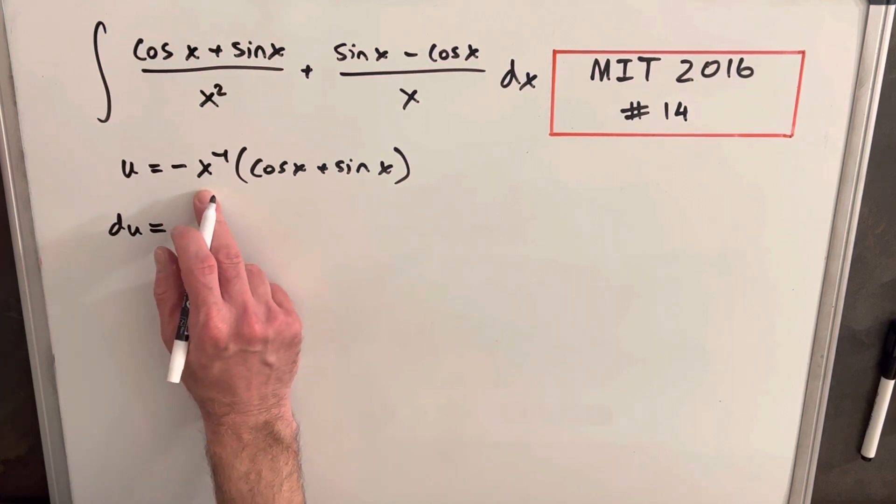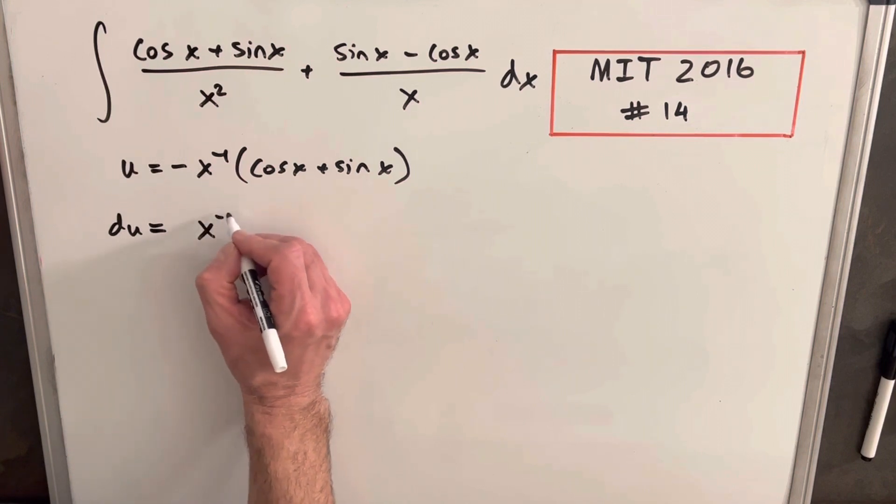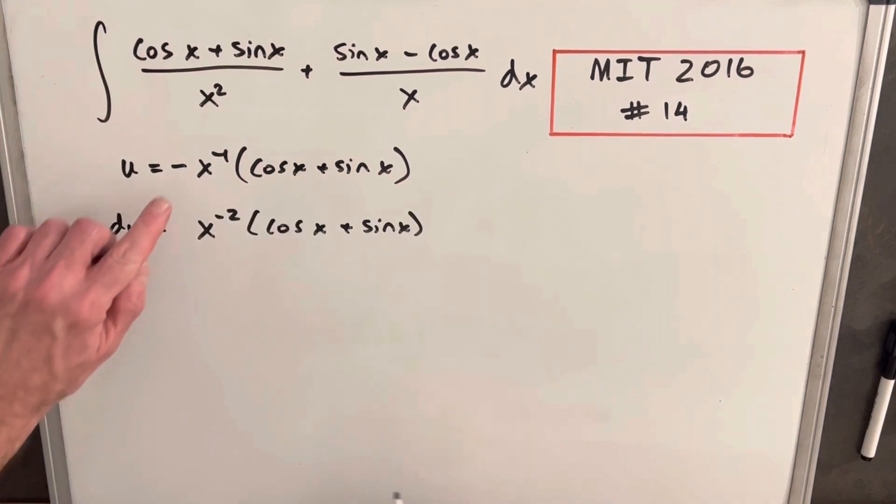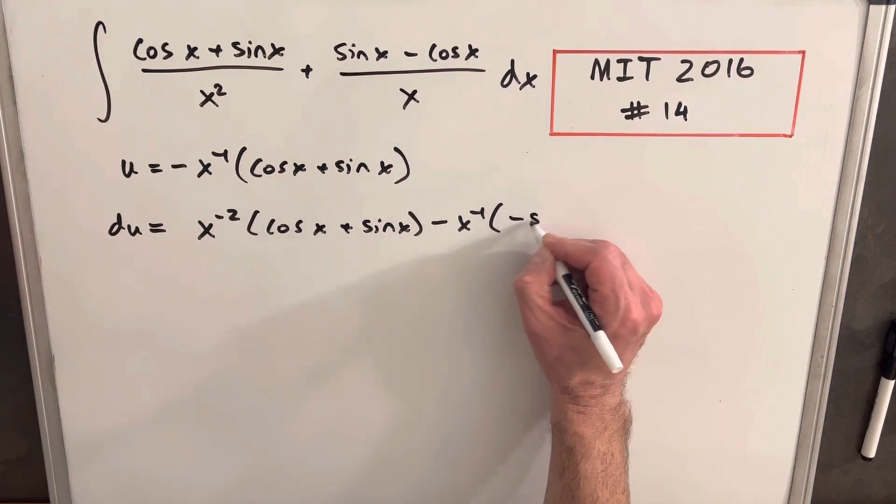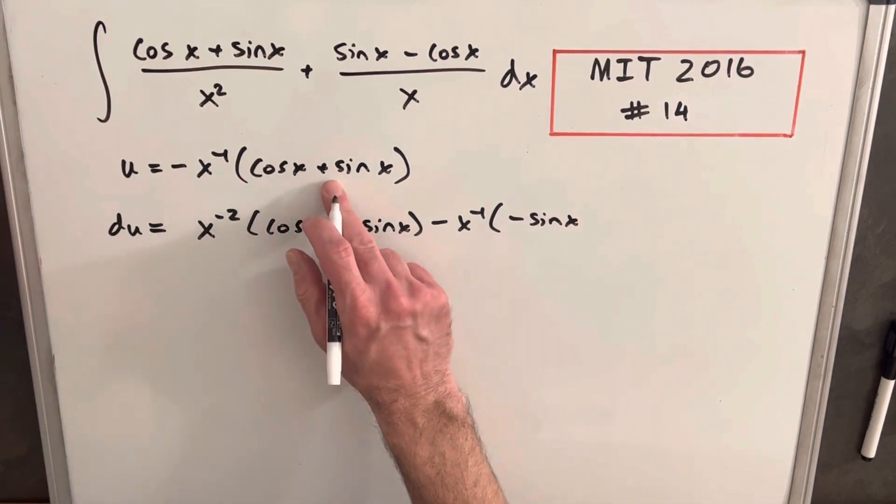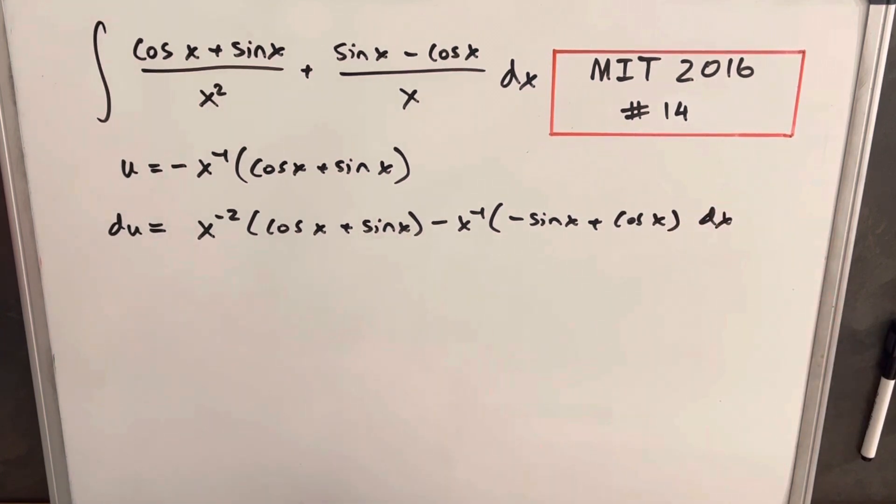I'll take my derivative. The derivative of this is going to be minus times minus, which is plus x to the minus 2. Now we keep the first term and take the derivative of the second. Taking the derivative of this, we'll have minus sine x plus cos x dx. Let's just check. This term is exactly that.